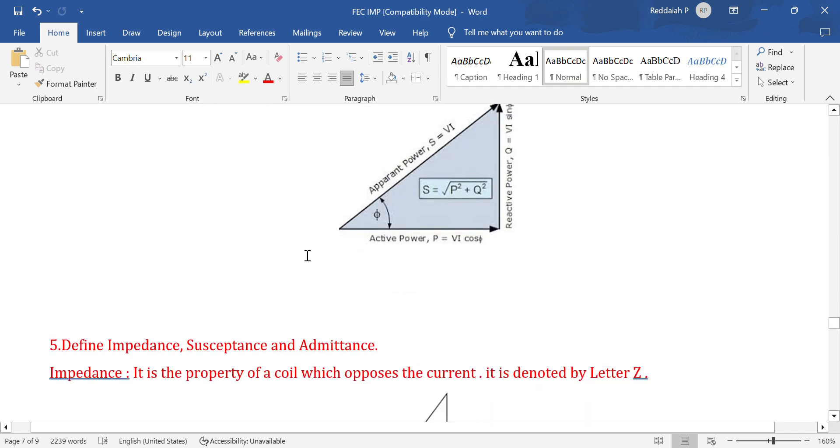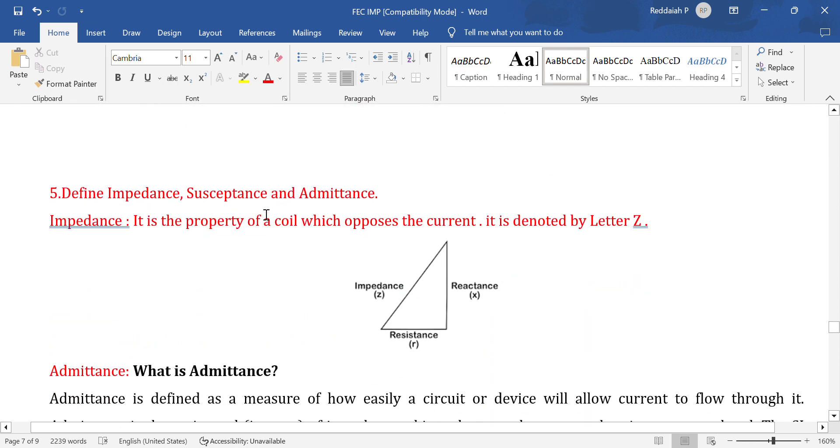Impedance is similar to resistance but in case of AC circuit. Impedance is the property that opposes the current. It opposes the flow of current in AC circuit. Impedance Z from the impedance triangle: resistance, impedance Z. Cos phi equals R by Z. This is the power factor.